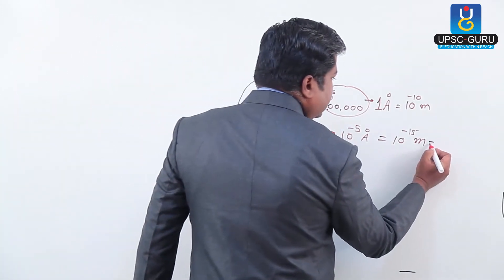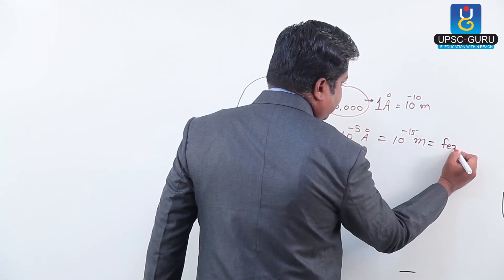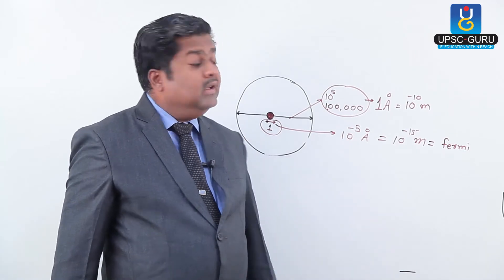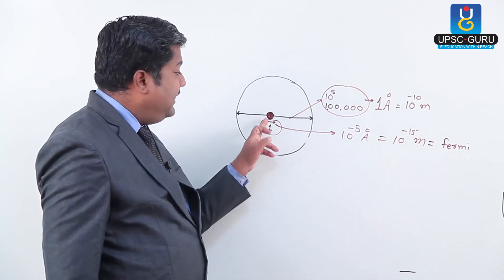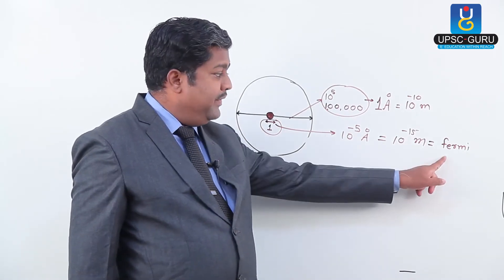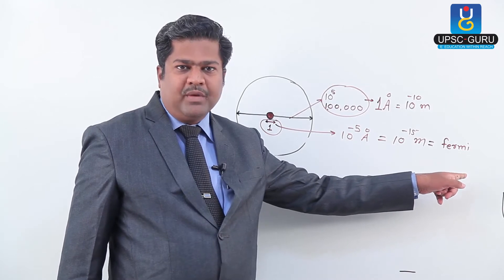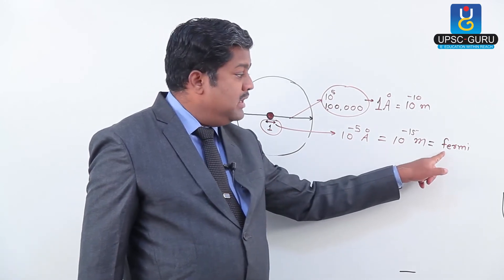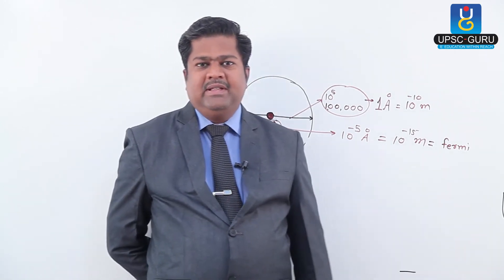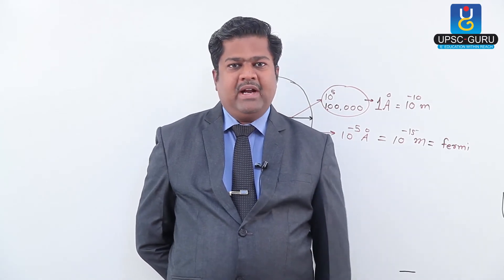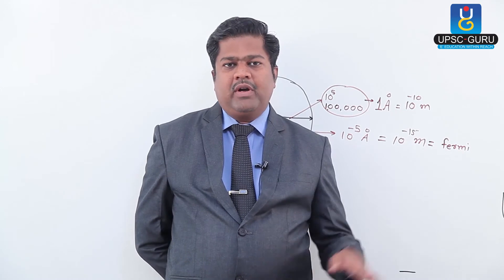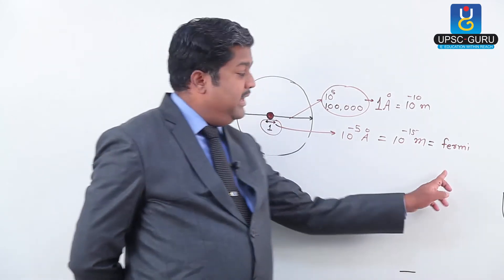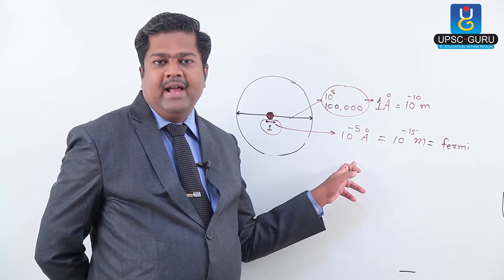This unit — 10 raised to minus 15 meters — is called the Fermi, written with a small 'f'. Fermi is the name of an Italian and later American scientist who discussed various facts about the nucleus of the atom. In his honor, the unit of nuclear diameter is given as Fermi. Since units below the metric level are written in small letters, we write it as 'f'. So 1 Fermi equals 10 raised to minus 15 meters, or 10 raised to minus 5 angstrom.